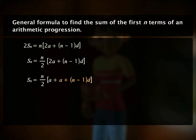Notice that a plus (n minus 1) times d, that is a_n, is the last term in the given n terms. The sum of n terms can therefore be written as n over 2 times (a plus l), where l is the last term in the given n terms of the arithmetic progression.